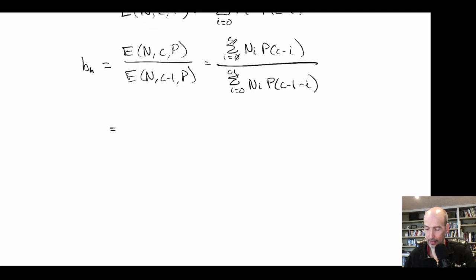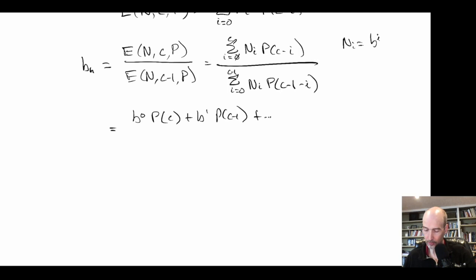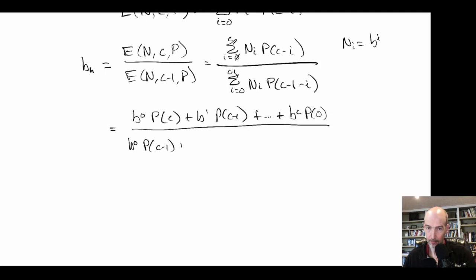Since n(i) = b^i, the numerator expands to: b^0 × p(c) + b^1 × p(c-1) + ... + b^c × p(0). The denominator expands to: b^0 × p(c-1) + b^1 × p(c-2) + ... + b^(c-1) × p(0). The numerator has one extra term compared to the denominator: b^0 × p(c), which is at most 1. Ignoring that term, we get an approximate result where each remaining term in the numerator differs from the corresponding denominator term only by a factor of b.